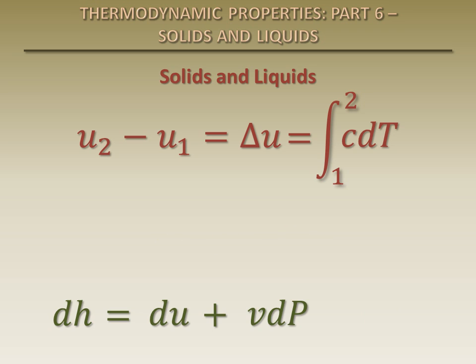We now integrate this equation from one state to another. Because the specific volume of incompressible substances is constant, the last integral becomes the specific volume times the change in pressure.